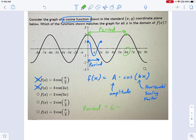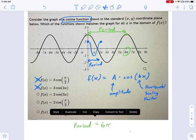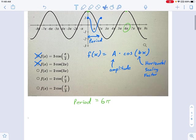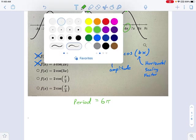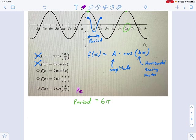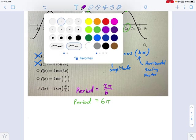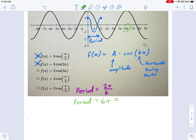Period of this function equals 6 pi. Now, the way we calculate what b is, is the following formula. Period is defined in the following way. Period equals 2 pi divided by b. So that means this 6 pi right here, 6 pi is equal to literally 2 pi divided by b.